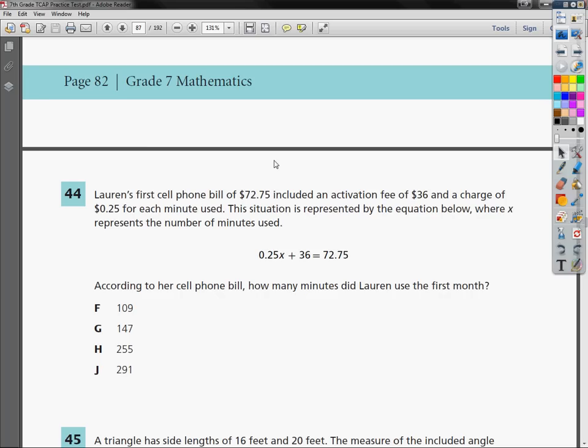This is the TCAP practice test for grade 7, the math section question number 44. Lauren's first cell phone bill of $72.75 included an activation fee of $36 and a charge of $0.25 per minute for each minute that she used. This situation is represented by the equation below where x represents the number of minutes used.